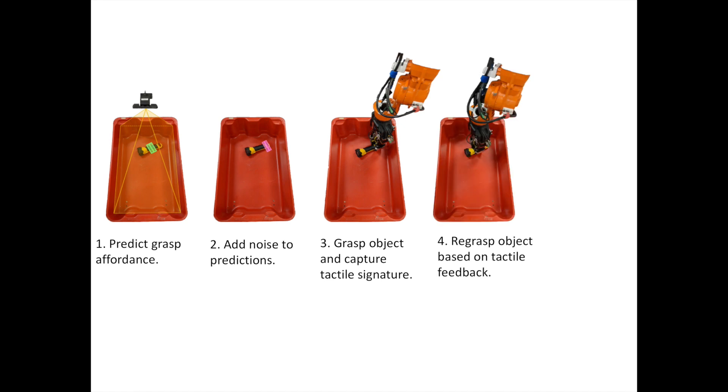Fourth, a local grasp adjustment is performed based on the tactile feedback. Finally, the robot shakes the gripper to get ground truth on the quality of the grasp.